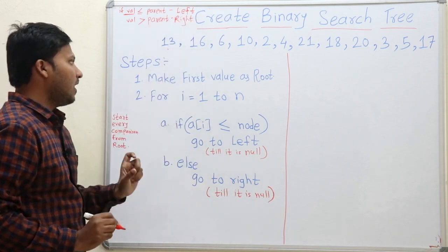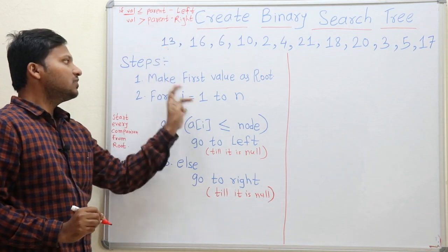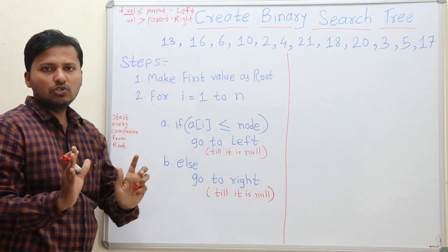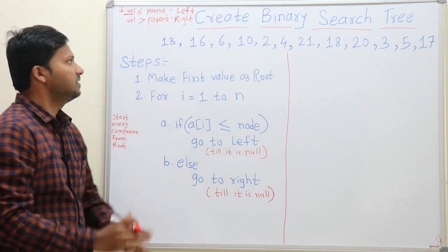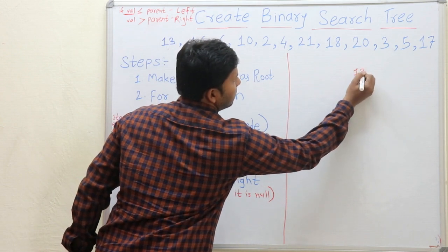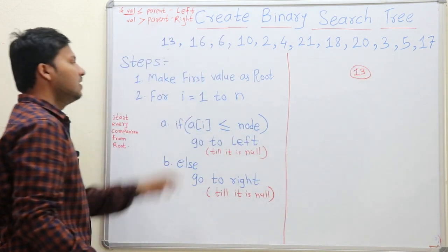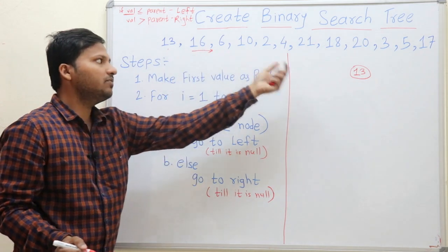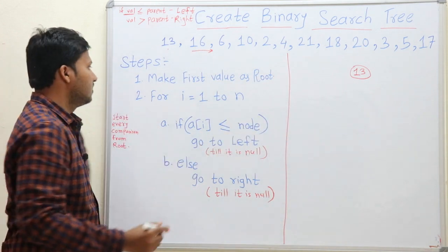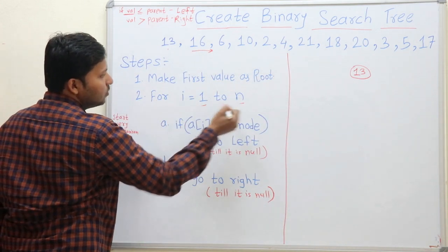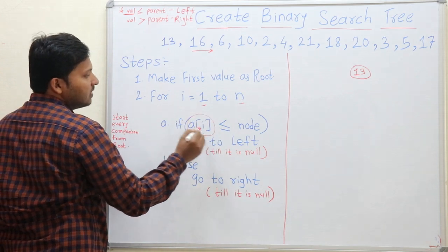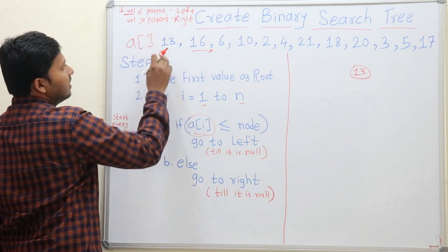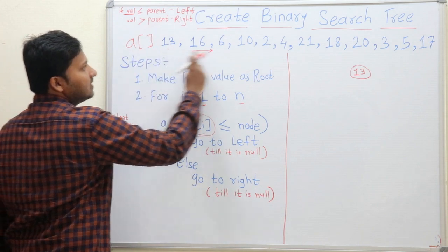The first value will be the root of the binary search tree. From the second element onward, we will check every element with its parent. For i equal to 1 to n, if the value a[i] — meaning if you have been given an array, these are the elements in that array.